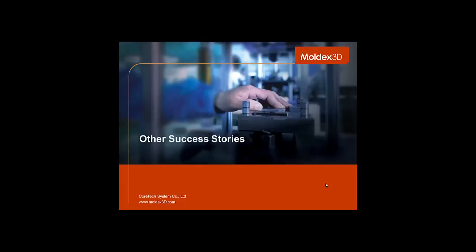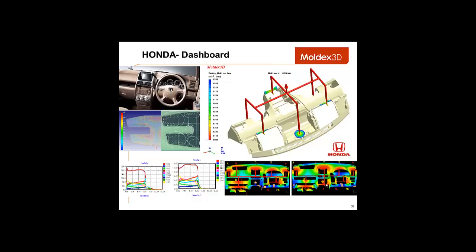Now, we'll go over some other success stories, beginning with the Honda dashboard. Here, we can see the flow rate between the gates is unbalanced, meaning that one gate is filling the cavity a lot faster than the others.